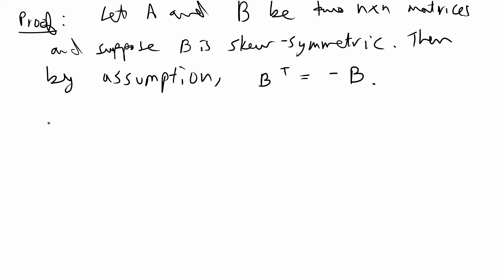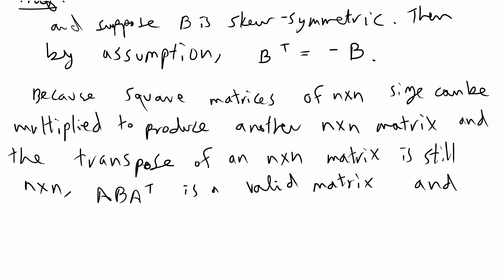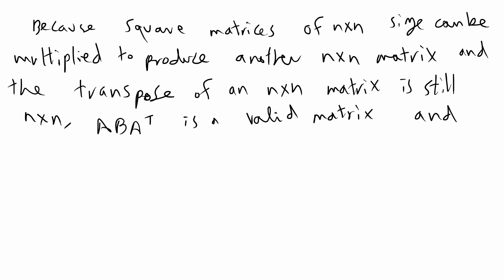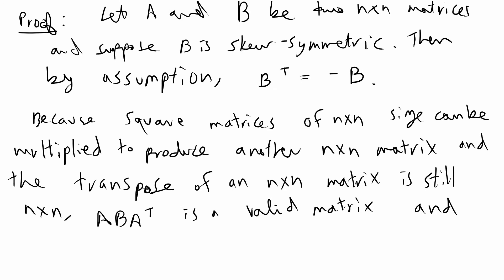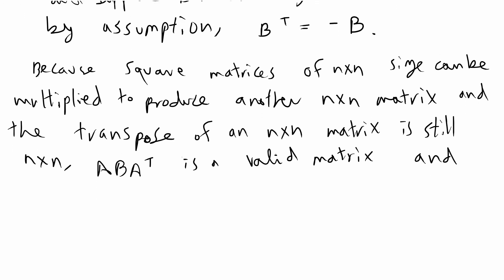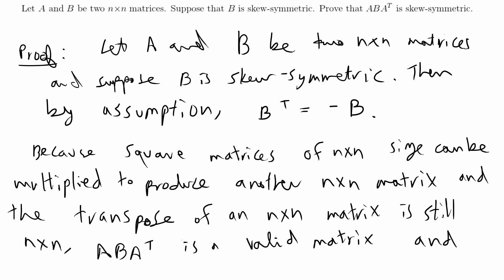I was just very explicit because it was a midterm problem. This is kind of like just writing out things that are kind of obvious, that you can multiply an n by n matrix, and just saying explicitly that ABA transpose is a valid matrix, although we're kind of given that it is.